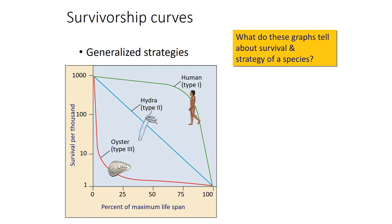Let's look at Type 1, which is a human. When you reach 50% of your lifespan, most humans are still alive — we don't start to die off until we reach the end of our lifespan. What happens to a Type 3 organism? And what about a Type 2 organism? Think about what you see in this graph.